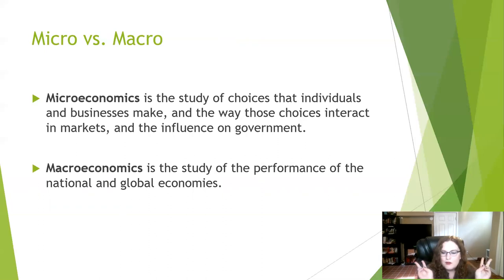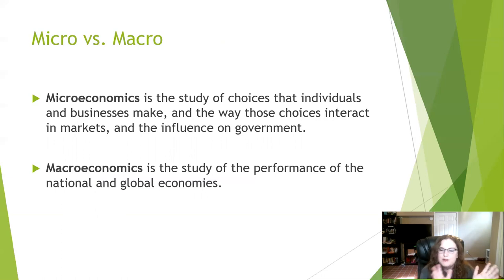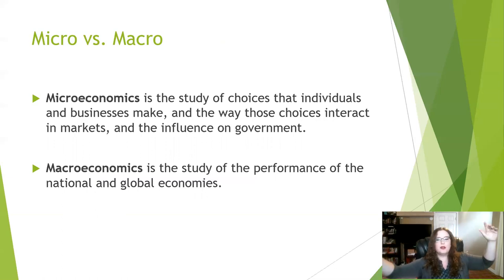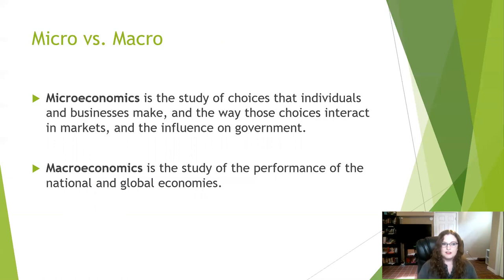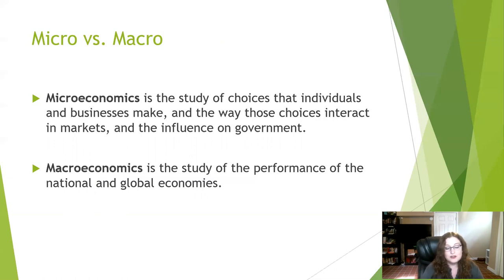Let's give more formal definitions. For microeconomics, it's the study of choices that individuals and businesses make — why does the person do this, why does the business do this, and how do they interact in markets and how are they influenced by government? Macroeconomics is the study of the performance of national and global economies and how they all work together. I am not a macroeconomist and don't want to be — I'm more interested in that micro-level decision-making.